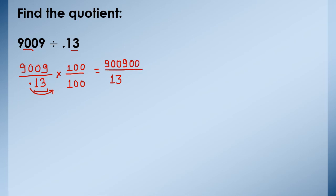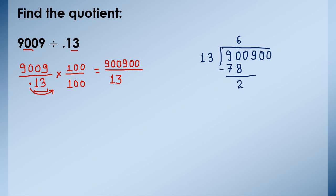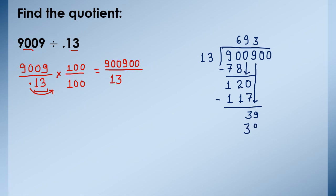So we have to divide 900900 by 13 now. 13 sixes are 78. Subtract them. We will get 2 and 1 left here. Bring down 0. 13 nines are 117, subtract them, 3 is left. Bring down 9. 13 threes are 39, subtract them, 0 is left. Now these two zeros are left, we can directly put these two zeros in the quotient. Therefore we got quotient equals 69300.